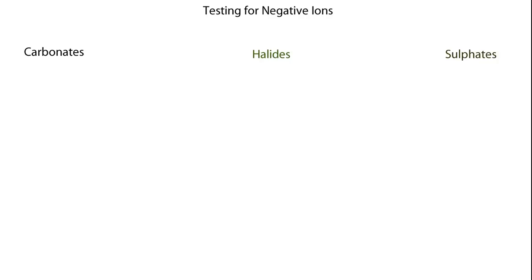Welcome to my video. Here you're going to learn how to test for negative ions. If you have an unknown substance, you'll be able to test through these three techniques to determine whether it's a carbonate, a halide, or a sulphate. There are three simple tests which you can do to differentiate between the substances.